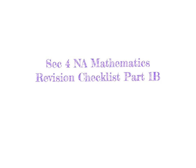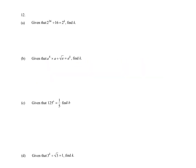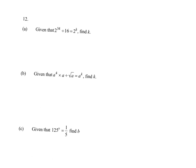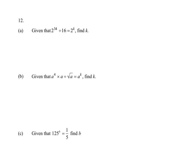Sec4NA Revision Checklist Part 1B. Question 12a: given that 2 to the power of 34 divided by 2 to the power of 16 equals 2 to the power of k. What we need to do is change them to the same base.